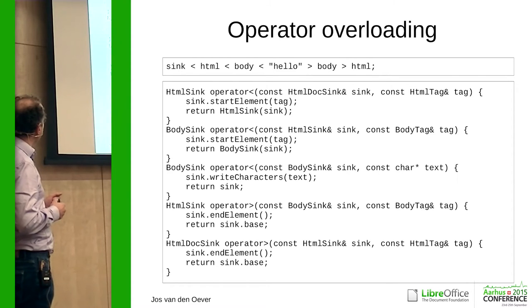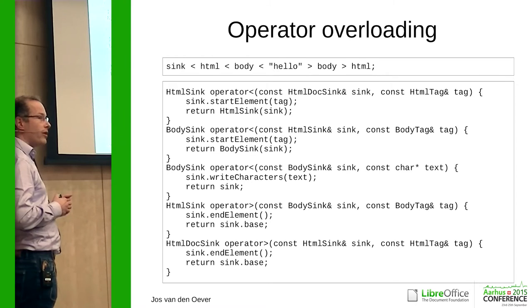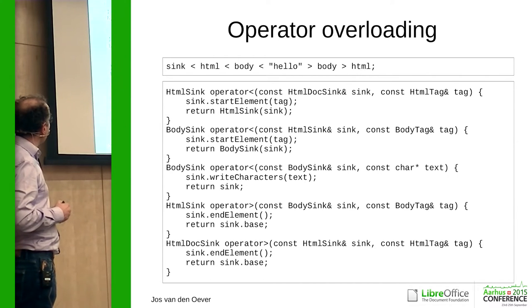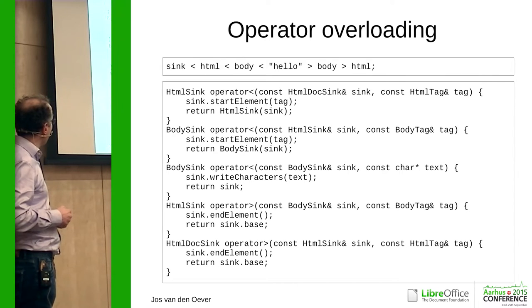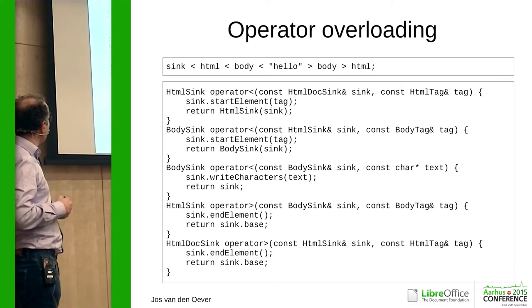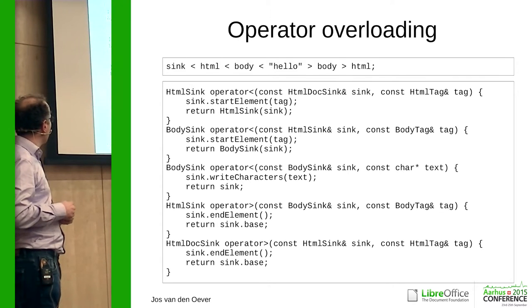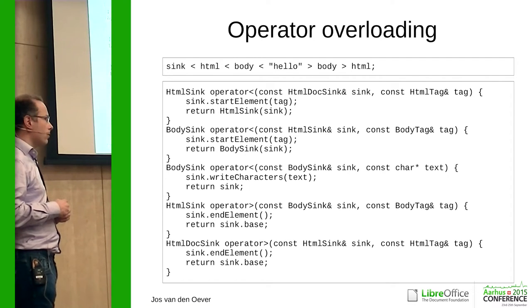Here I put the whole XML writing on one line, and this is a more traditional way of writing the operators for less-than and greater-than. This is the implementation for it. The operator gets the HTML doc sink, it gets the tag which is the HTML, and in the back it just starts the element and returns a new sink. Then this HTML sink goes in here, gets a body tag, writes a start element, and returns another sink. This one accepts text — I'm using just a character string here, but you could use something else. That writes the characters and also returns a body sink again. The body sink can be closed with the tag again with the less-than operator, so it calls end element.